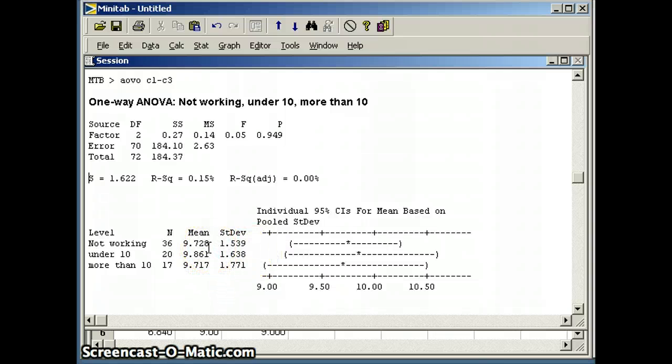Notice the means are remarkably close. Not working. The average grade point average was 9.728. Under 10 hours, 9.861. And more than 10 hours, 9.717. So if that's the case, we do not see a very large effect here.